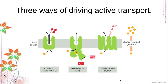Here is a diagram of the three ways for driving active transport. For the coupled transporter, it involves two different solutes: one solute is driven towards its concentration gradient and the other is against it, so it transports two solutes simultaneously. For the ATP-driven pump, one domain hydrolyzes the ATP and that energy drives movement against the concentration gradient. For the light-driven or redox-driven pump, light energy allows transport against the concentration gradient.